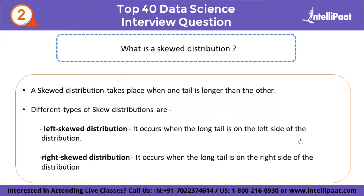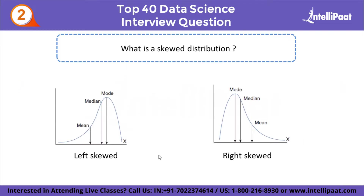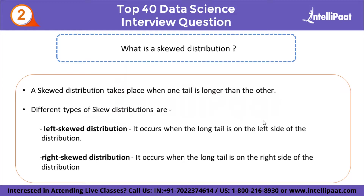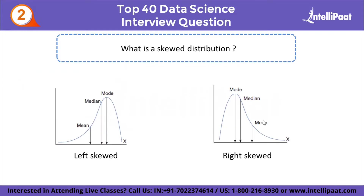Coming to the right skewed distribution, it occurs when the long tail is on the right side of the distribution. It is also called positively skewed distribution. Here the mean is to the right of the peak, and mode is greater than median, and median is greater than mean. In the graphical form, for left skewed, mode is greater than median and median is greater than mean. For right skewed, mean is greater than median and median is greater than mode.